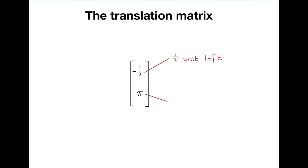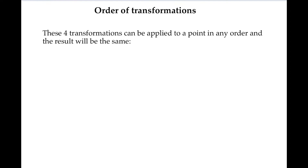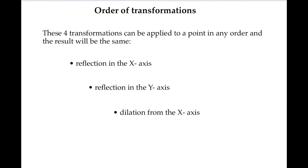These four transformations can also be applied in any order and produce the same image: reflection in the x-axis, reflection in the y-axis, dilation from the x-axis, and dilation from the y-axis. So the information for all of these can be contained in a single matrix without further thought about order.